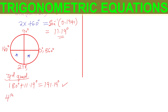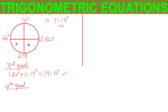For the fourth quadrant, we take 360 degrees and subtract the acute angle. So 360 minus 11.19 degrees gives us 348.81 degrees. That is the second angle.